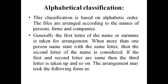Now let's discuss alphabetical classification. This classification is based on alphabetic order of words or names. The files are arranged according to the names of persons, firms, and companies. Generally the first letter of the name or surname is taken for arrangement. When more than one person's name starts with the same letter, then the second letter of the name is considered. The same applies in case of organizations as well.